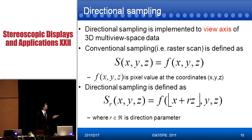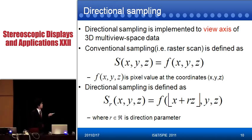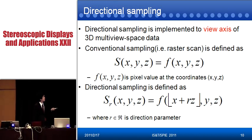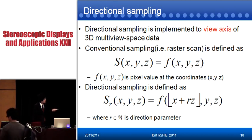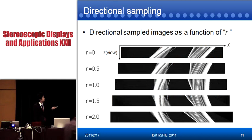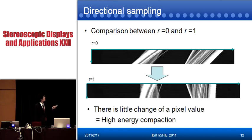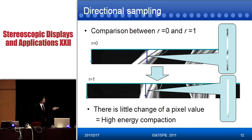Conventional sampling, for example raster scan, is defined as one equation. Where f(x, y, z) is the pixel value at coordinate x, y, z. On the other hand, directional sampling is defined by a different mathematical equation, where r is the directional parameter. By changing the directional parameter, we obtain a kind of skew images. Comparing conventional sampling and the parameter r equal to 1, you can see in the blue line of the image that with directional sampling there is little change in pixel value. This means we obtain high energy compaction, making it a kind of transform coding.